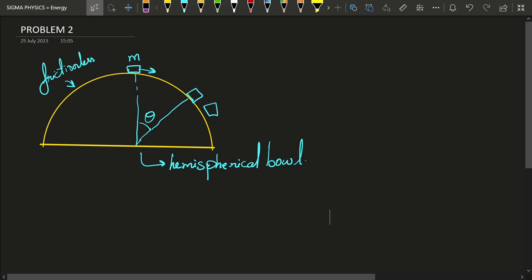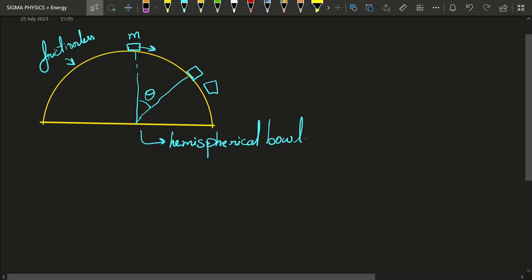Now what I am going to use to solve this problem is just conservation of energy and our knowledge of circular motion. Initially the kinetic energy of the block was zero, it was at rest, and it had only potential energy. Let us say the radius of this bowl is r. Then initially its potential energy, the potential energy of the block, is going to be mgr.